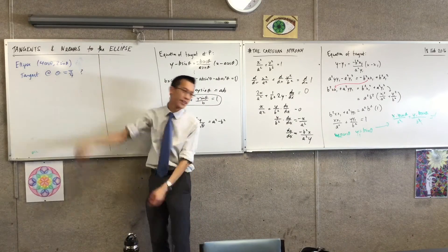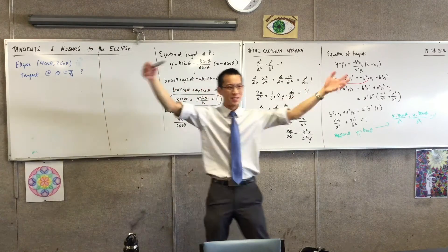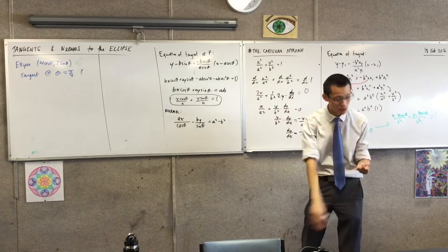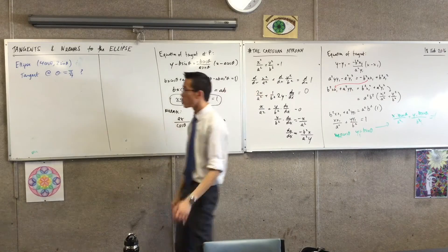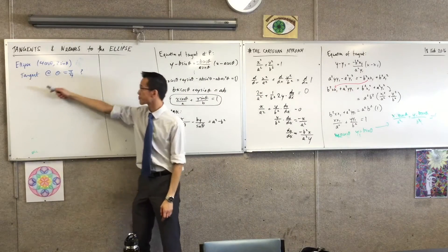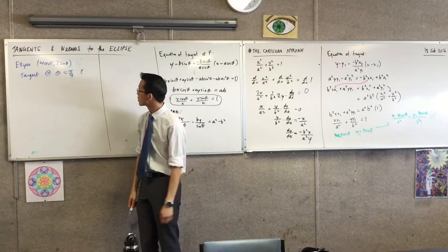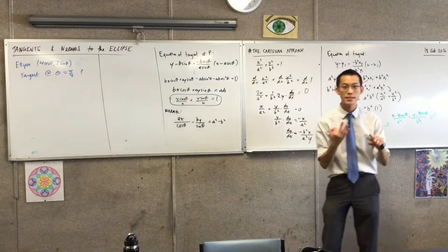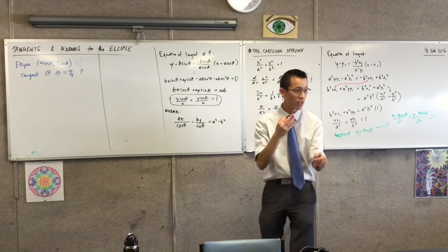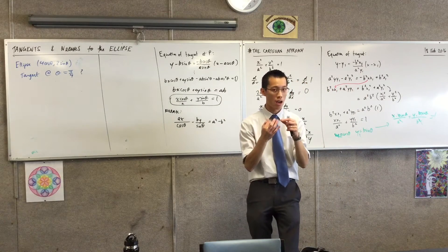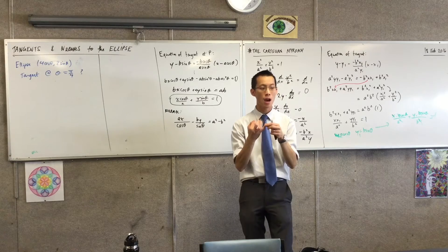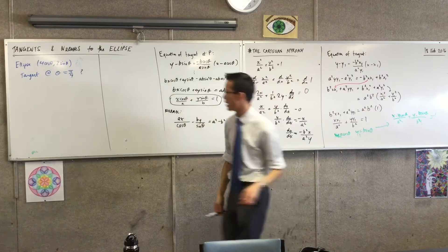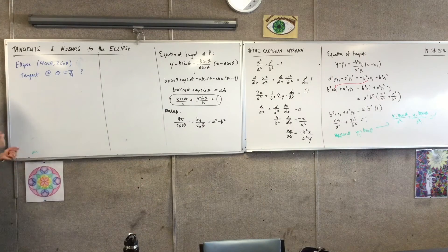This is a typical question. There will be an ellipse represented by x equals 4 cos theta, y equals 2 sine theta. What they want to know is, what is the equation of the tangent for this particular value of theta? What I need is three pieces for a tangent: an x-coordinate, a y-coordinate, and a gradient. Let's do the easy bits first. Let's work out x and y.